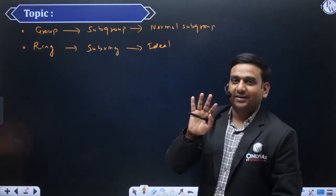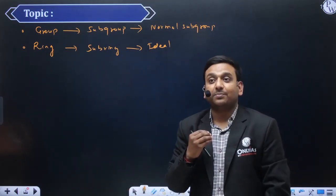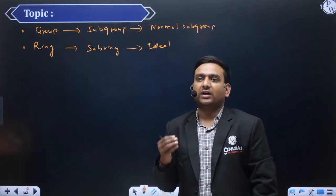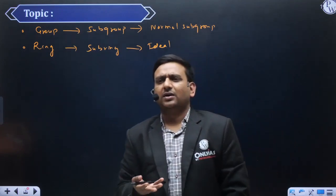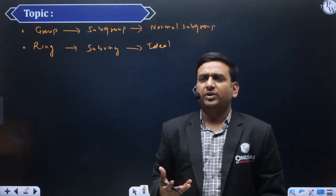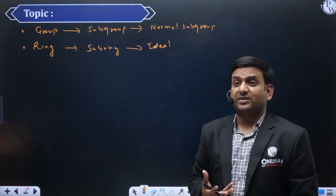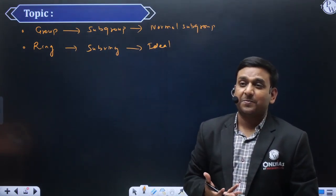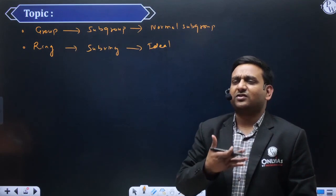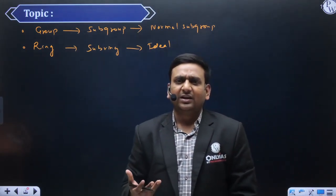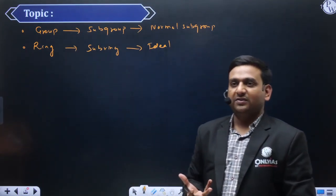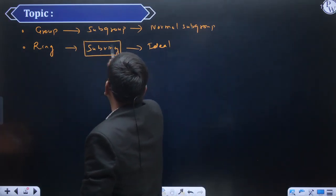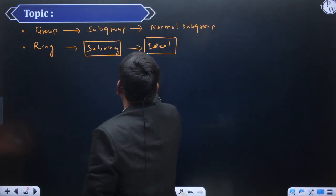Ek symmetry nazar aa gayi ki kaise padhna hai yahan par. Jo group theory mein humne ideas ko explore kiya hai, this is just the extended version of that. Group theory mein like 70% efforts are needed, 30% are for ring theory, kyunki saare ke saara wahi structure ko reflect hona hota hai. Basics remain the same.